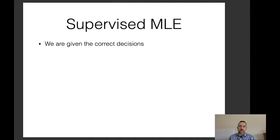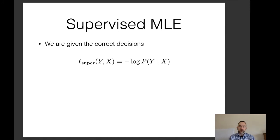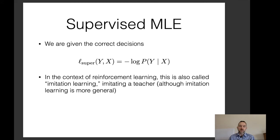Why use reinforcement learning in NLP? One scenario is a typical RL setting without a gold-standard action sequence — for example, a dialogue system where we don't know the correct dialogue actions, but at the end we know if the user was satisfied or successfully completed a task like booking a plane ticket. Other scenarios include models with latent variables, such as a latent parse tree, where we decide the latent variable and get a reward based on that configuration. We may also have sequence-level error functions like BLEU score that we can't optimize without generating the whole sentence. In supervised MLE, also called imitation learning, we are given the correct decisions and learn from them directly.